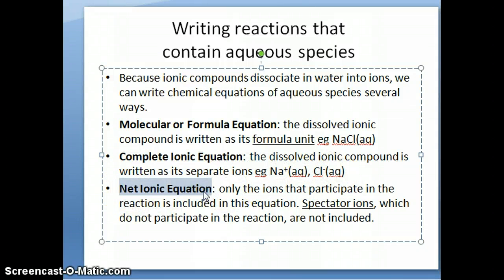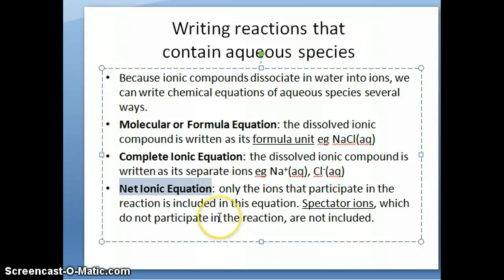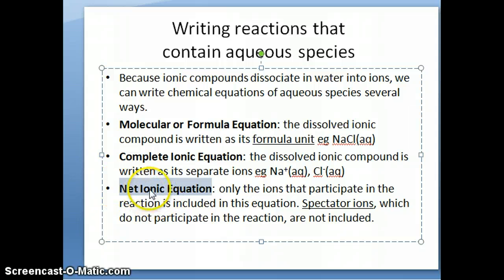The last type is the net ionic equation. In aqueous reactions, not all ions are always involved in the reaction — sometimes ions are present but not participating. Whenever ions don't participate in the reaction, we call them spectator ions, and we remove them from the net ionic equation. So the net ionic equation basically just shows the species that participate in the reaction.